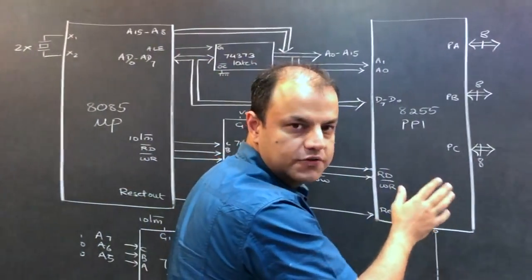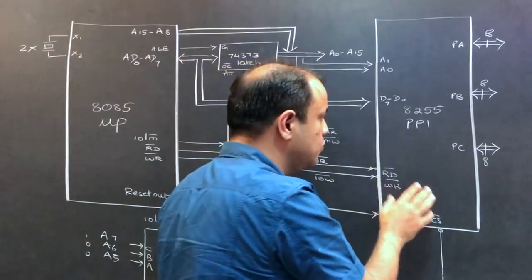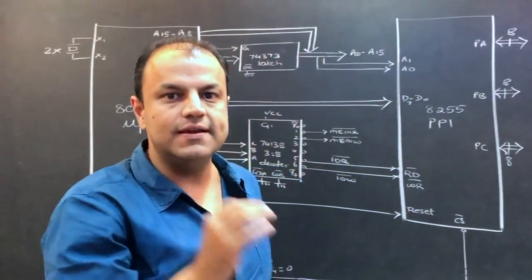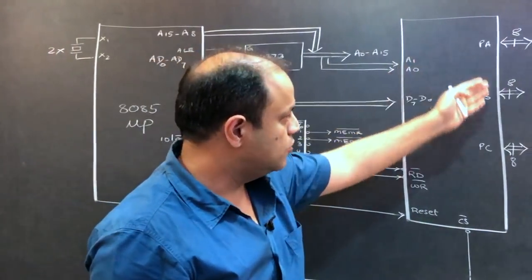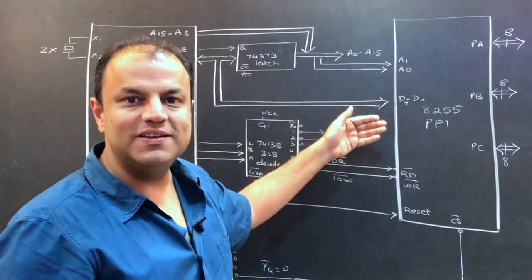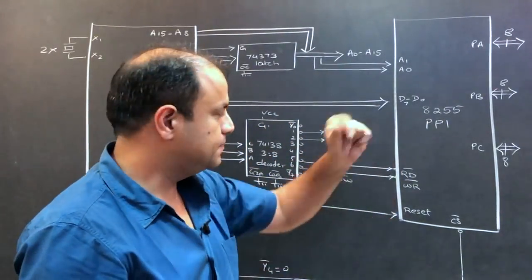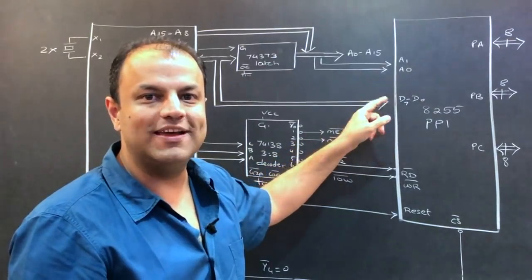You first focus here, not at the MUP. You first focus here. You draw all the things that you need for 8255. You need your three ports. You need address bus, data bus and control bus. For address bus, you need two lines.